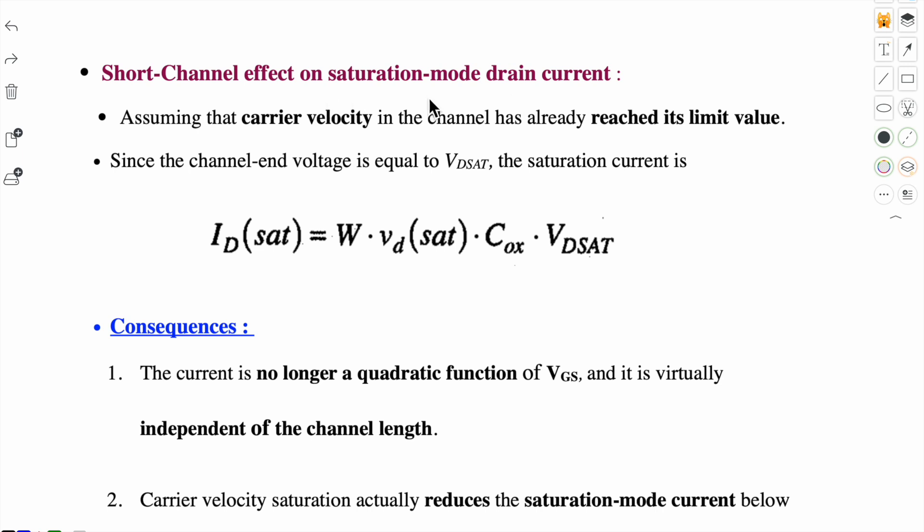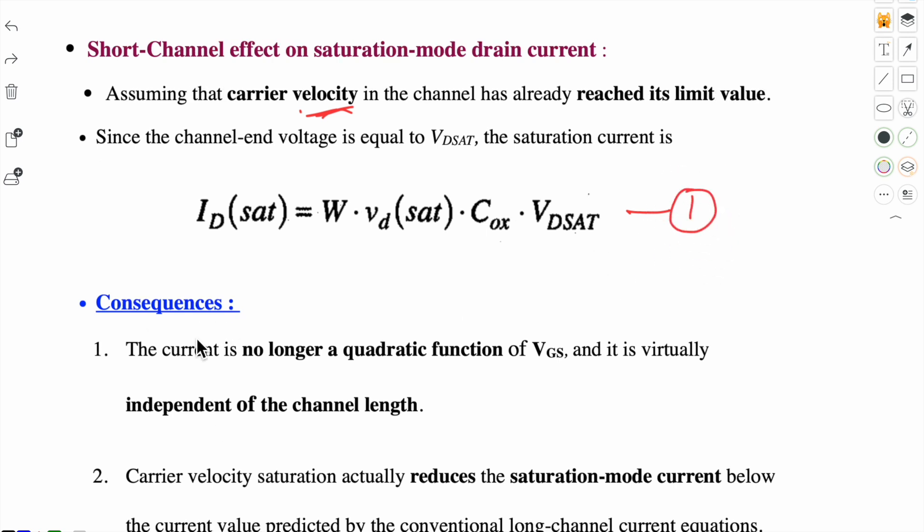So the short channel effect on saturation mode drain current. Here we are assuming that the carrier velocity in the channel has already reached its limit value. So drain current in this case is given by equation 1. Now the consequences of short channel effect on drain current: first, the current is no longer a quadratic function of V_GS, it is now independent of channel length.